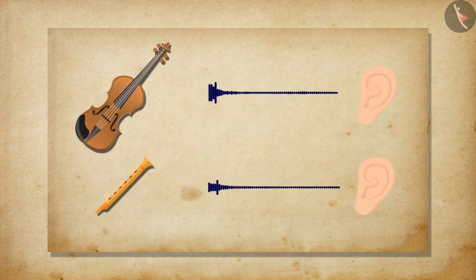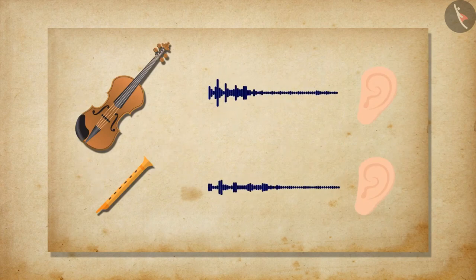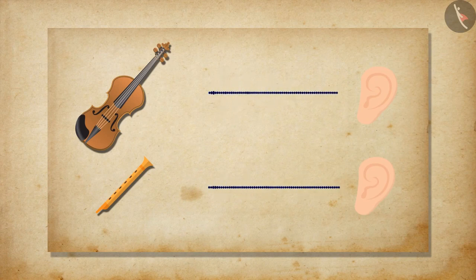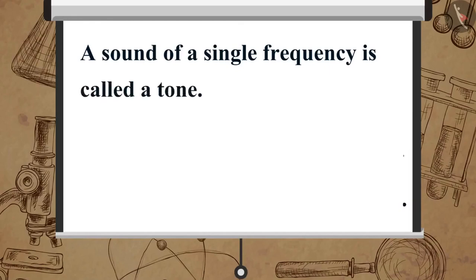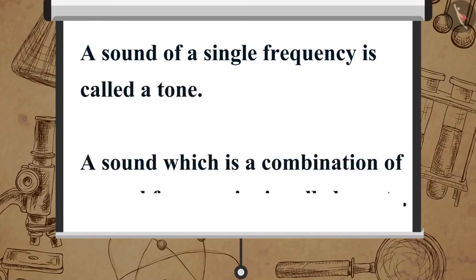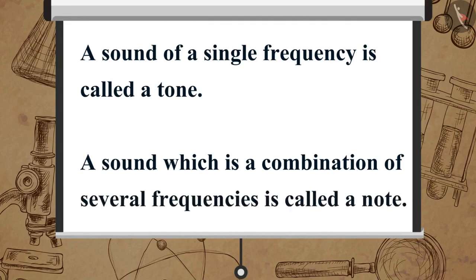The quality of a sound is the feature which helps us to differentiate between two sounds with the same pitch and loudness. A sound of a single frequency is called a tone, and a sound which is a combination of several frequencies is called a note, which is pleasant to our ears.